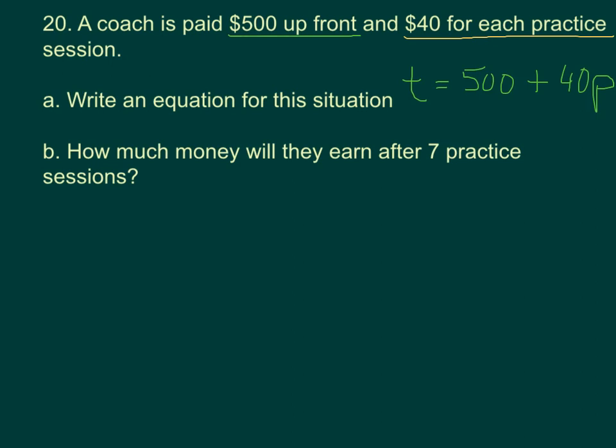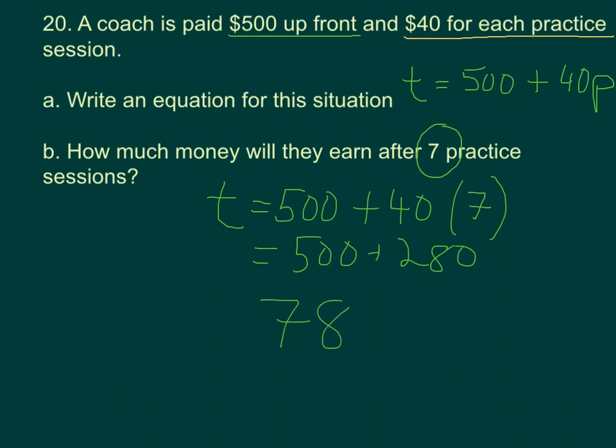How much money will they earn after 7 practice sessions? Well, if we plug in 7 for P, we'll get our answer. The total amount of money equals $500 plus $40 for 7 practice sessions, equals $500 plus $280. So the total amount is $780.